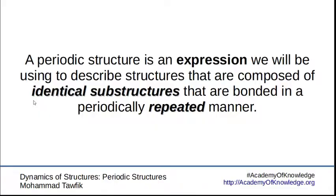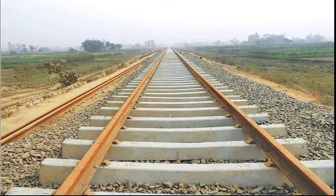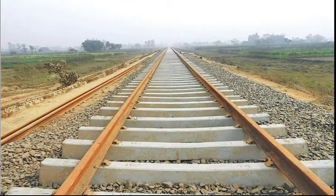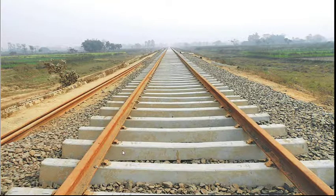Maybe if we look at such a picture, we can really understand what we're talking about. These railroads are supported every, say, half a meter maybe. I don't know the exact distance between those two supports, but they are repeated forever. Well, almost forever.